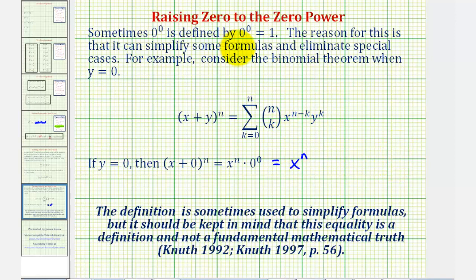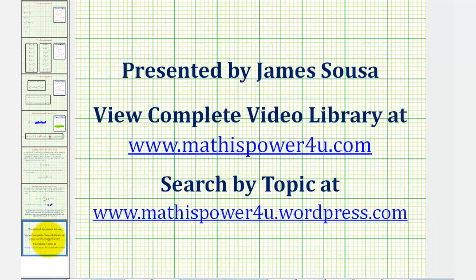So as you can see, zero to the power of zero is not quite as clear as we hope in mathematics. But I do want to end with a quote that I found when defining zero to the power of zero equal to one. This definition is sometimes used to simplify formulas, but it should be kept in mind that this equality is a definition and not a fundamental mathematical truth. I hope you found this discussion helpful. Thank you.